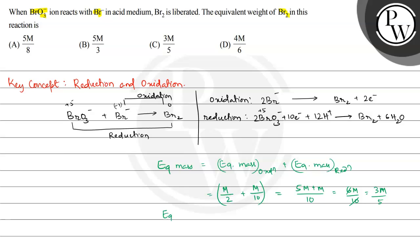The equivalent mass of Bromine equals 3m divided by 5, which is correctly given in option C. So our correct answer is option C.